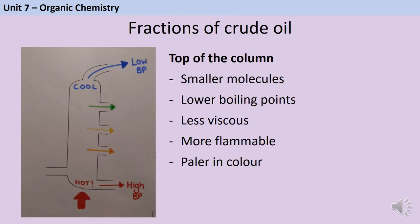In addition the smaller molecules collected at the top of the fractionating column have lower viscosity. Viscosity is a measure of how easy to pour and sticky something is so golden syrup is an example of a very viscous liquid whereas water has very low viscosity. The smaller fractions are also more flammable and they burn with a cleaner less smoky flame so this makes them better fuels.